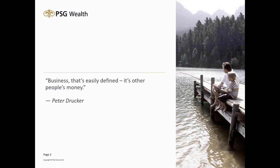When it comes to building wealth, the name of the game is returns. Many people measure returns based simply on the level of their assets. But the key metric that investors should care about is return on invested capital. The difference between return on invested capital and return on assets is what we call OPM — other people's money.